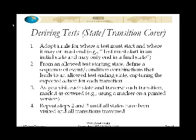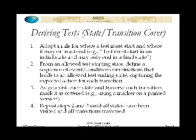We want to have some way of saying, well, this is a test, and this is a test, and they're separate based on that rule. So with that rule in place, this one is pretty typical of the one shown here. You then define a whole sequence of events or event-condition combinations that lead you to an allowed test ending state. And we're going to want to capture at the very least the expected action as the expected result for each transition.